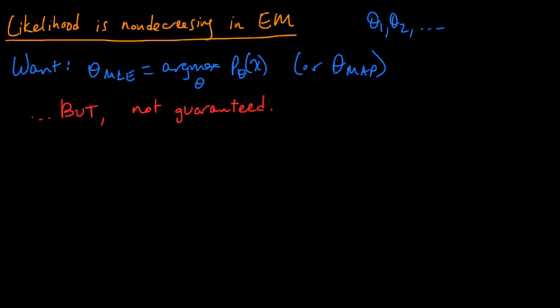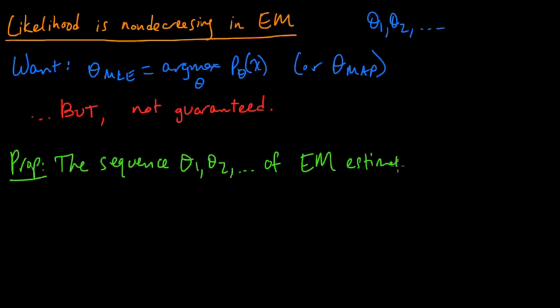On the other hand, we do have the following guarantee. So we have the following proposition: The sequence theta1, theta2, and so on, of EM estimates, the sequence of parameter vectors produced by the algorithm, satisfy the following.